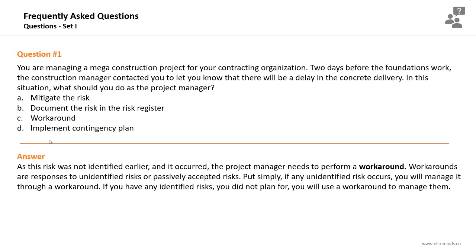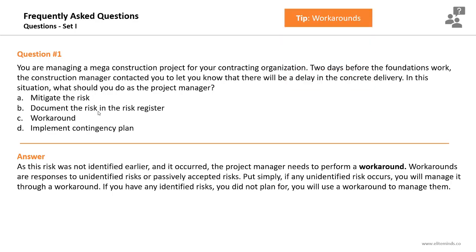As the risk was not identified earlier and it occurred, the project manager should perform a workaround. Workarounds are responses to unidentified risks or risks that were passively accepted. One of the risk response strategies is acceptance, which can be passive or active. Simply put: if any unidentified risk occurs, manage it through a workaround. If you have identified risks you did not plan for, also use a workaround. The keyword here is 'there will be a delay' — it's a fact, an issue. Options A, B, and D are invalid; the only valid option is workaround.